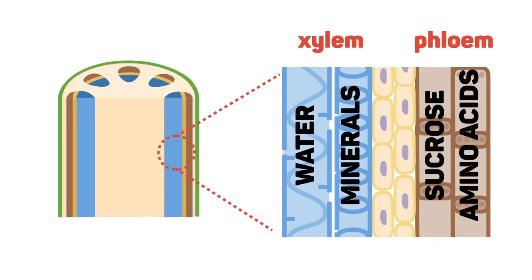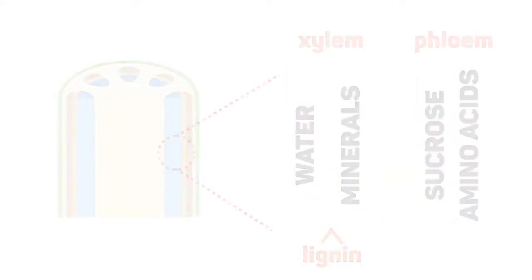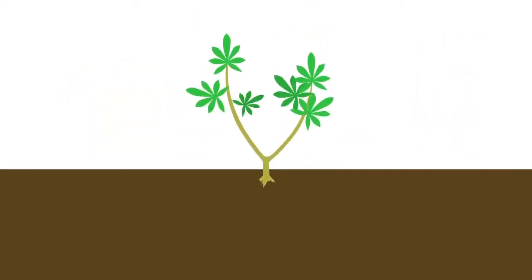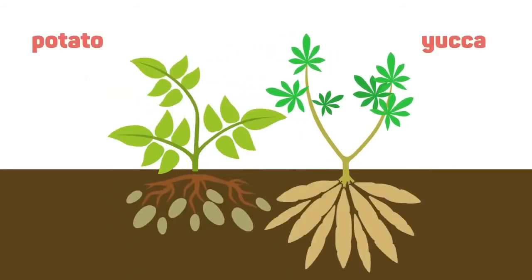The xylem has a substance called lignin which helps keep the stem upright. Stems are mostly found above the ground but some plants have underground stems. Potatoes and yuccas are actually part of a swollen underground stem.